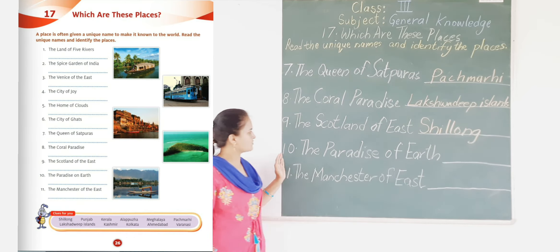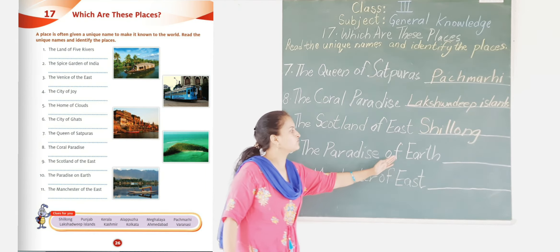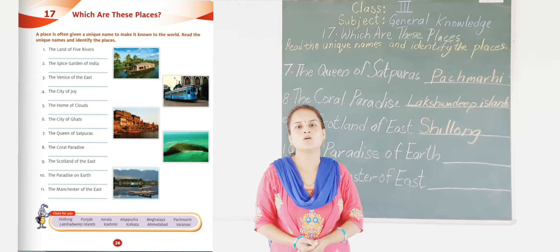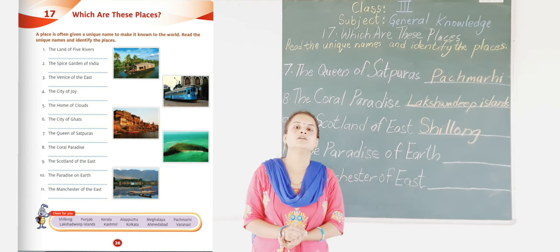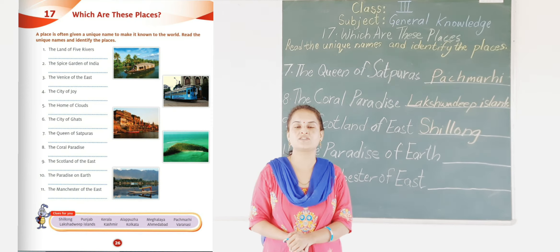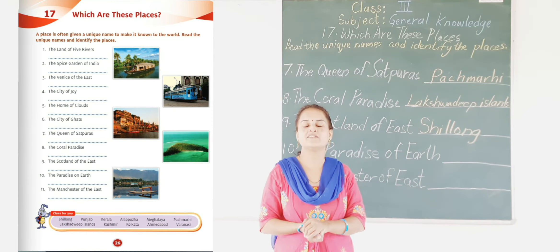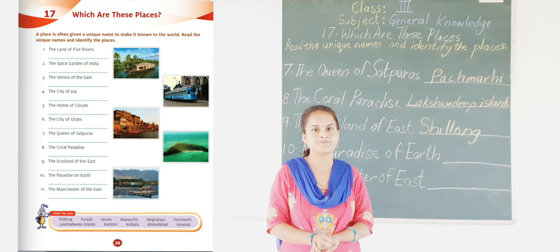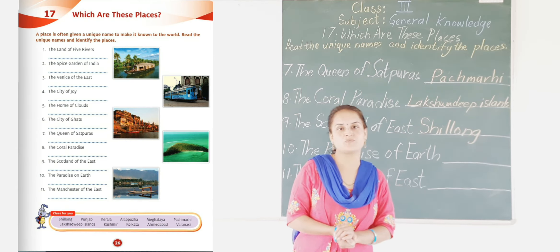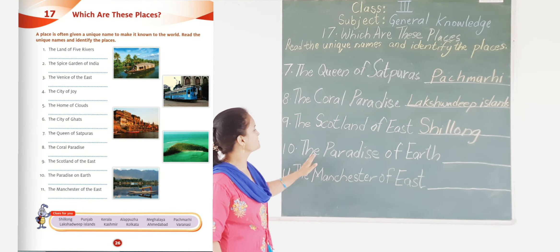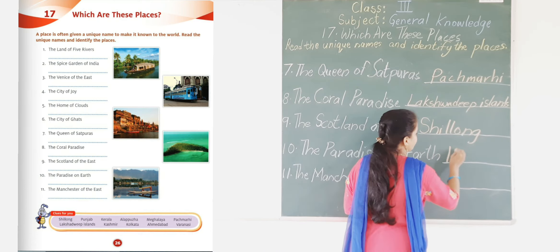Now the next point is the Paradise of Earth. Paradise means a very beautiful place. This state is known for the beauty of its nature. Which state in our country India is a very beautiful place because of its nature? Yes, it is Kashmir. So write down: Kashmir is called the Paradise of Earth.